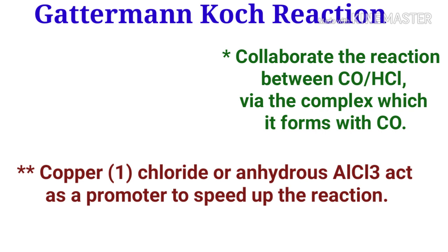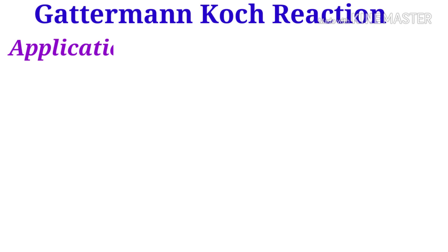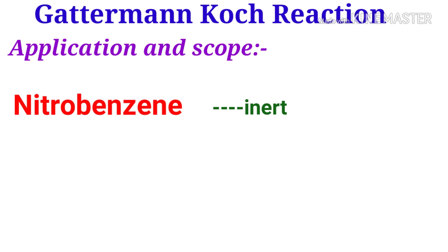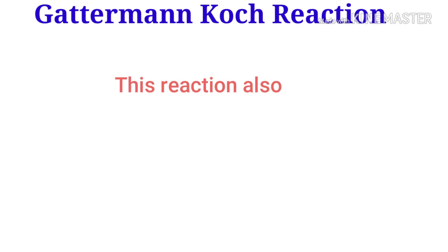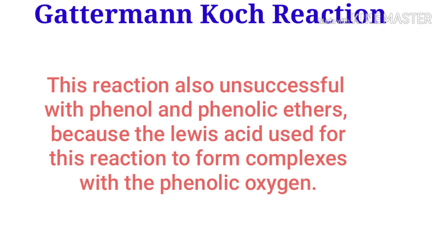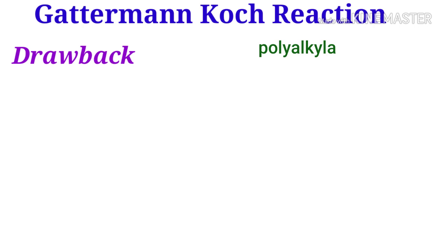Now let us discuss the application and scope of the Gattermann-Koch formylation reaction. The Gattermann-Koch reaction cannot be applied to compounds less reactive than halobenzene or aryl halide. Nitrobenzene is inert and can be used as a solvent for this reaction. The Gattermann-Koch formylation reaction is also unsuccessful with phenols and phenolic ethers, because the Lewis acid used forms a complex with the phenolic oxygen.